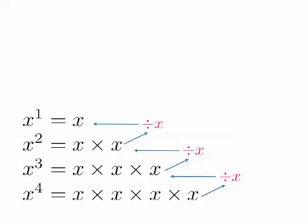And in order to define what x to the zero is, we just continue on with this pattern. So we divide again by x, and what's x divided by x? It's 1. So that's the reason why x to the zero power is 1.